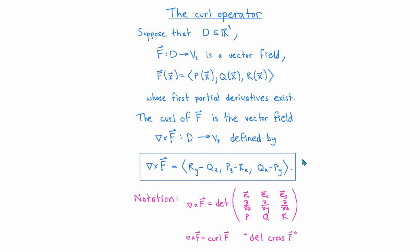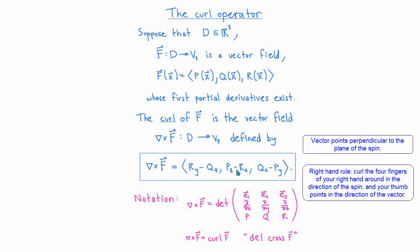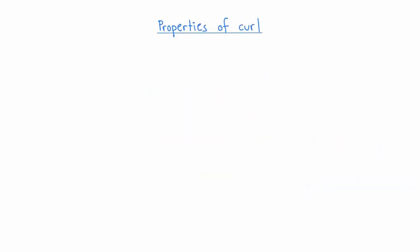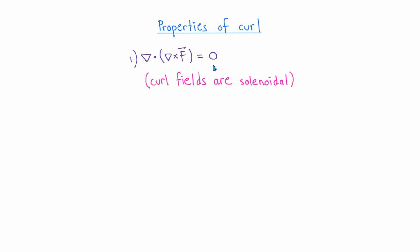One way to remember the curl formula is as the cross product of the vector of operators (∂/∂x, ∂/∂y, ∂/∂z) with the vector (P, Q, R). It's also common to write it as curl F. The magnitude of the curl vector tells you how fast the vectors of F are spinning in an infinitesimal region around each point; the direction is perpendicular to the spin and determined by the right-hand rule. Notably, curl fields are always solenoidal: ∇·(∇×F) = 0.